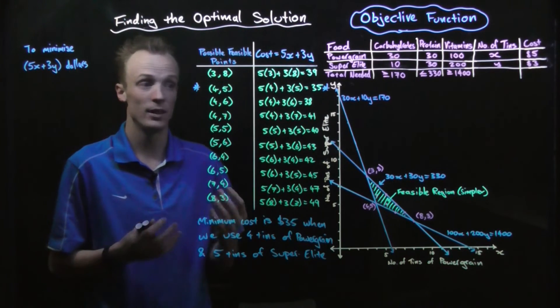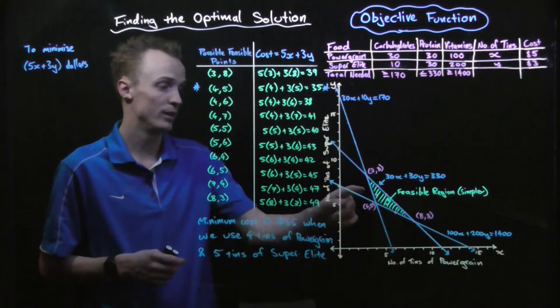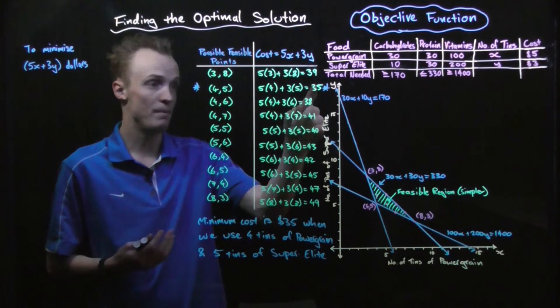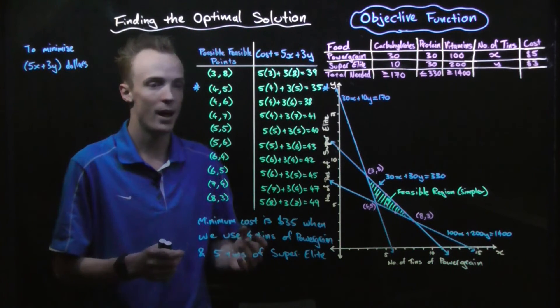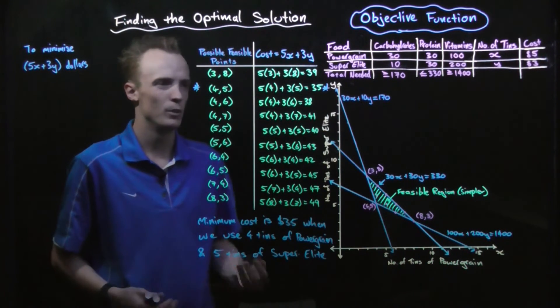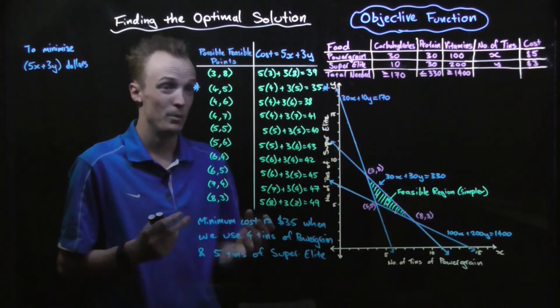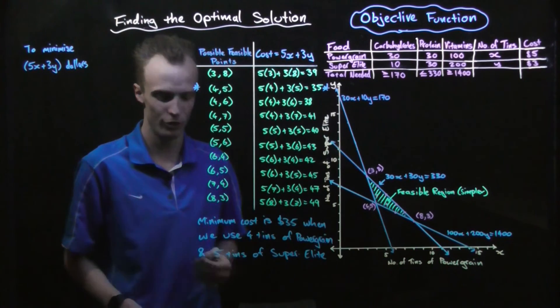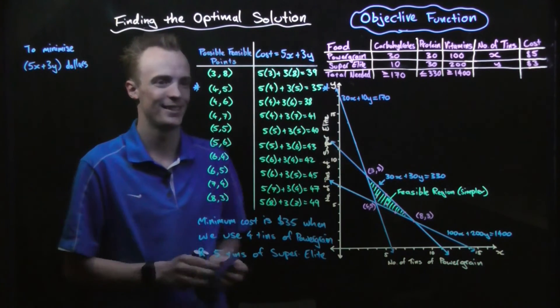They don't obviously occur at every vertex. So this combination of 3, 8, which is found at the top here, wasn't a minimum or a maximum. But they will always occur at a vertex. So what does that mean for our problem? Well, I didn't actually have to go through every single feasible solution. What I could have done is this.